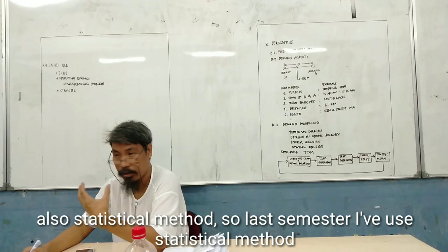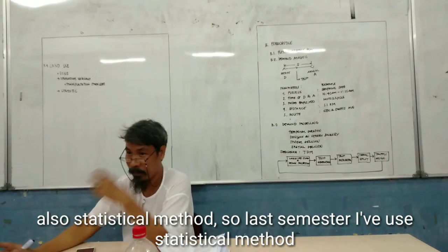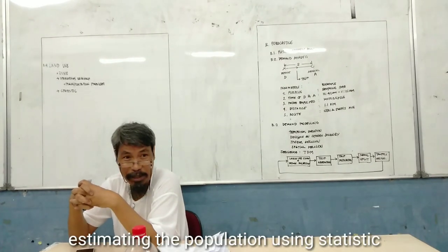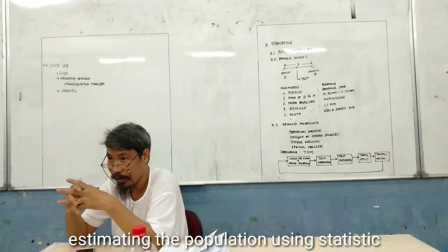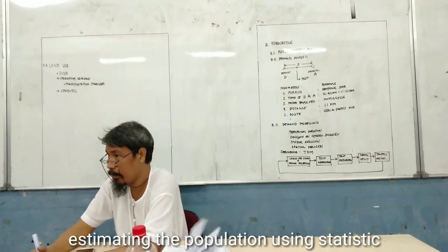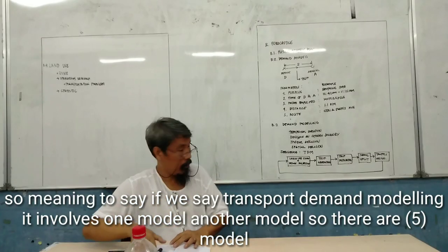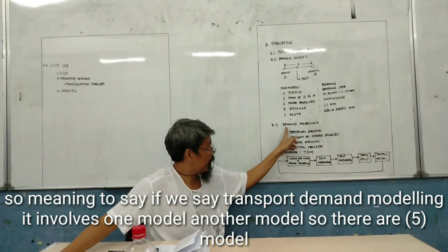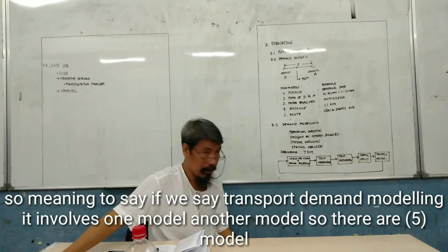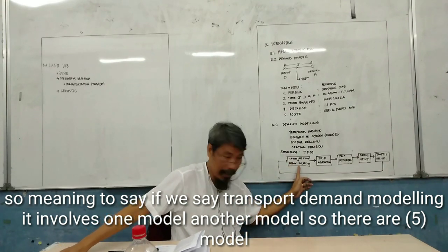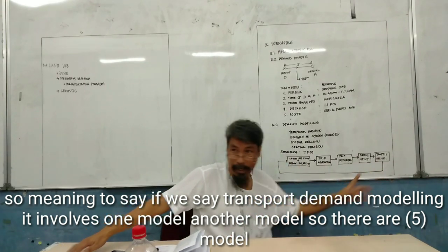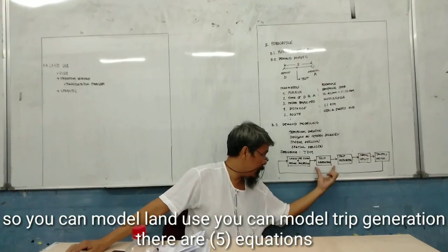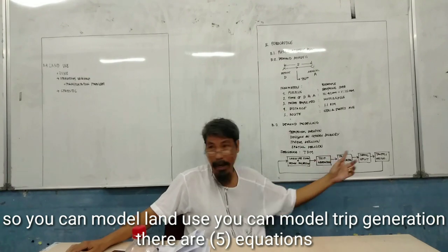So last second step, I used statistical method. We have estimating the population of specific standards. So meaning to say, if we say transport demand modeling, it involves one model, another model, so there are five models. So we will model land use, we will model trip generation. So there are five equations.